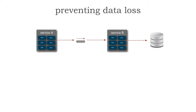The first area of data loss is when service A tries to get data to a queue — service A has that data, can't get it to the queue, and now the data is lost. The second area of data loss is when service B retrieves or receives the next message and it gets removed from the queue. If service B ends up going down, that data is lost.